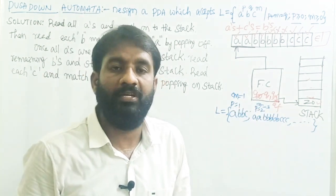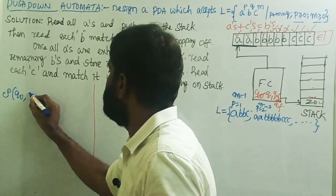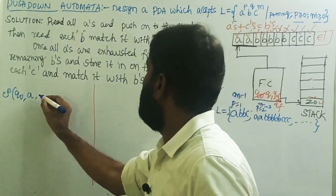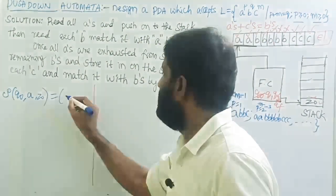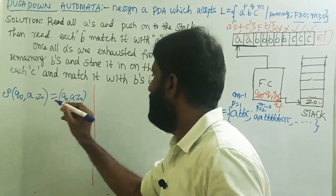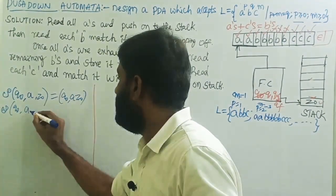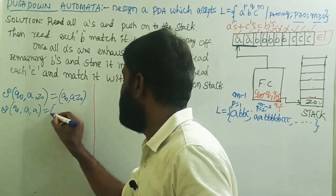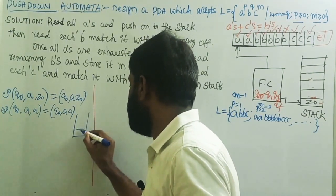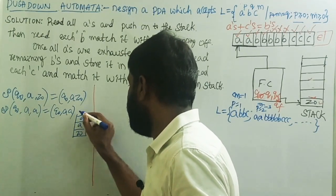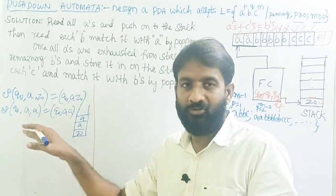Now let me write the transitions. Transition of Q0: first input symbol is A, top of the stack is Z-naught — remains on state Q0 and add A onto the stack. If there is one more A on the input tape, transition of Q0 with input A and top of stack A equals Q0 with A A on the stack. So the stack looks like: Z-naught, then A, then A. All A's can be read using the same transition.